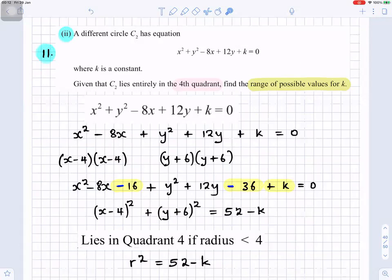Since it lies in the fourth quadrant, the radius will have to be less than 4. So that means r squared is equals to 52 minus k.